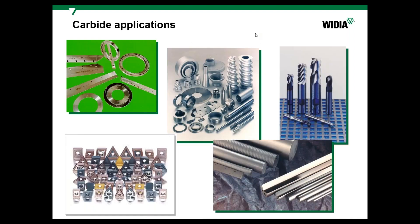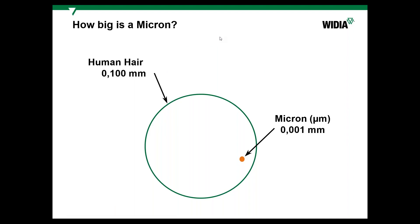Carbide is used not only in cutting tools but also in nozzles, rings, earthworks industries, and electronics and mobile phones because it is a very good conductor. When we talk about the structure of carbide, we should understand that the size of carbide particles is measured in microns — one micron is 100 times thinner than the thickness of a human hair.